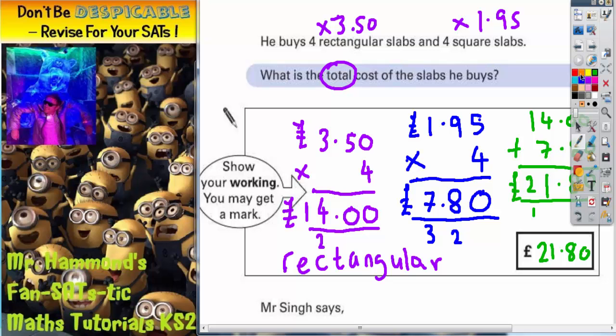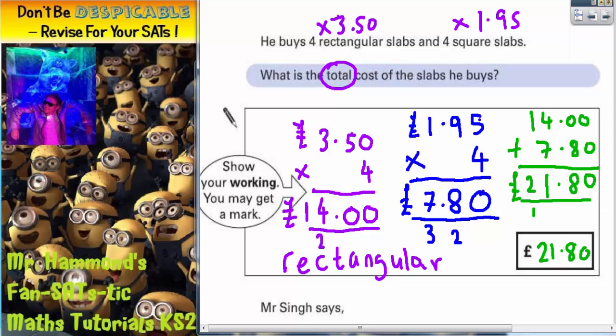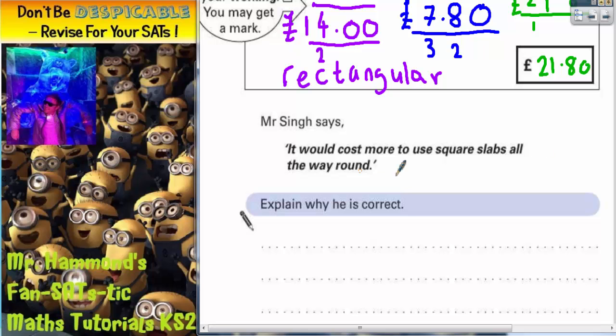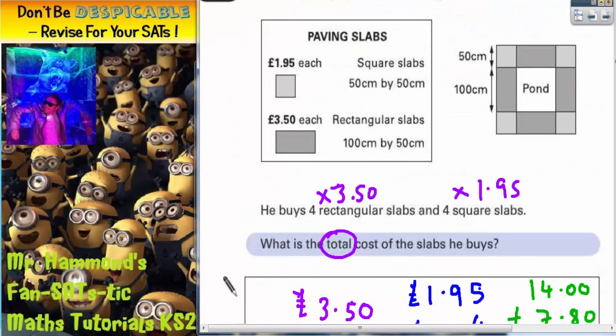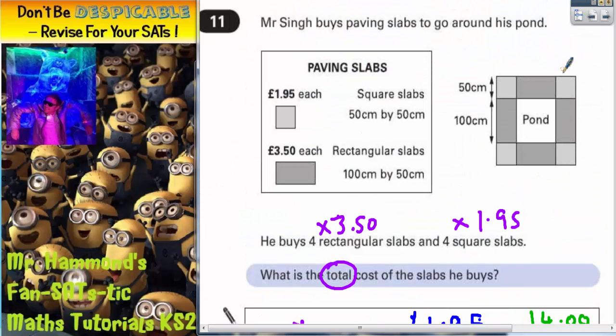Now, there is a second part to this question that says this. Mr Singh says it would cost more to use square slabs all the way round. Explain why he's correct. Well, there are different ways you can do this, but the simplest way of explaining it is to go back and look at the diagram and spot that a square slab is 50 centimetres long and a rectangular slab is 100 centimetres long, which is double the length of the square slab.